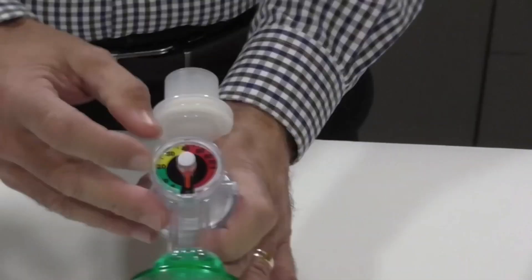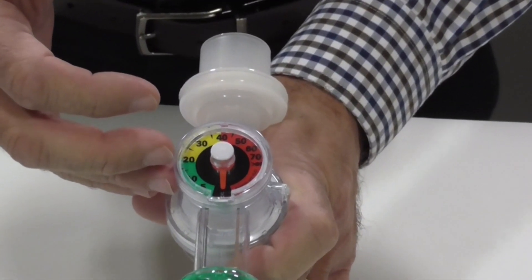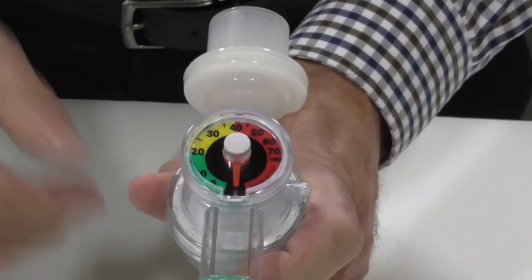You can see the manometer is color-coded. It's green from 0 to 20, yellow from 20 to 40, and red from 40 and above.